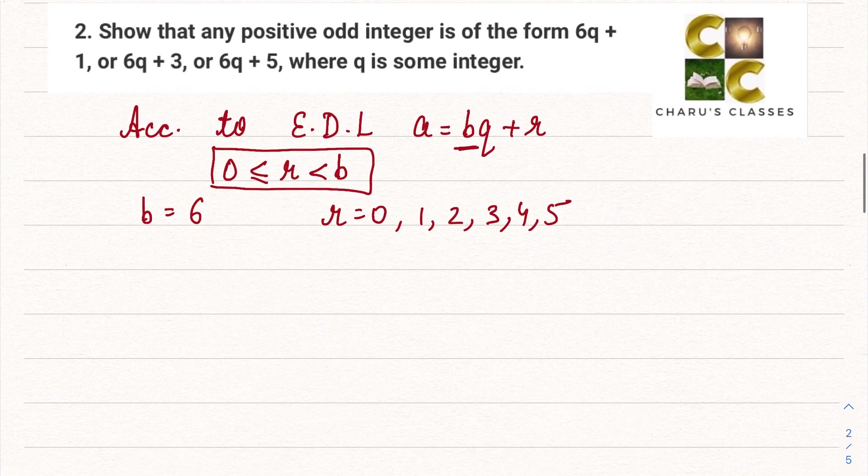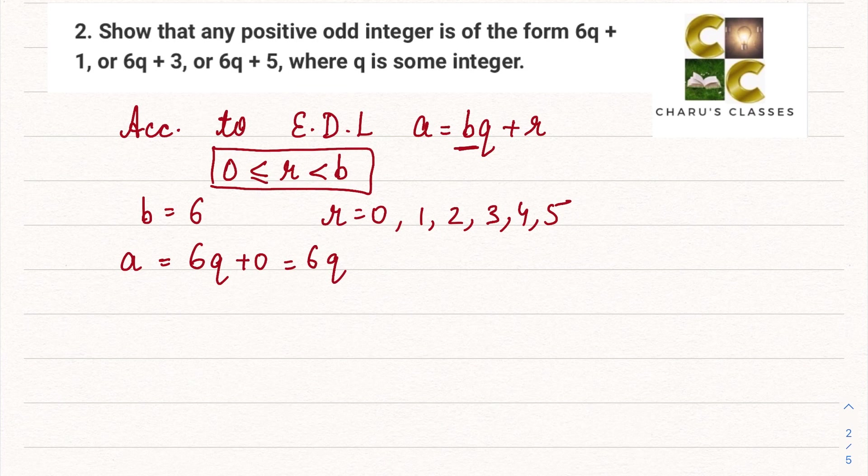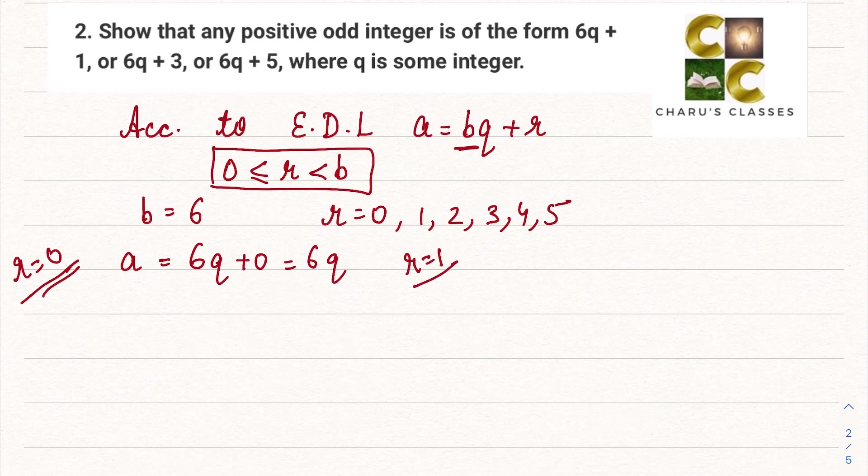Let's say when r is equal to 0, then what can we write for a? a can be written as bq + r which is 6q + 0, that is 6q. This is case 1 when r is equal to 0. If r is equal to 1, then we can write a is equal to 6q + 1.